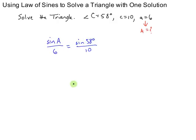And to solve for angle A, you're going to multiply both sides by 6. So you'll have 6 sine of 58 degrees over 10. And then you'll take the sine inverse to get A by itself. So we'll take sine inverse of all of this.